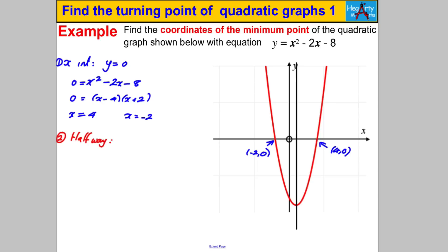Step 2: find halfway between the two roots to get the line of symmetry. We average: (4 + -2) ÷ 2 = 2 ÷ 2 = 1. So the line of symmetry is x = 1.